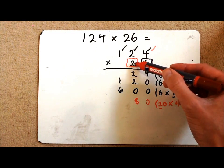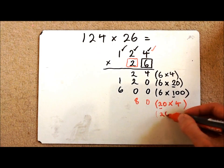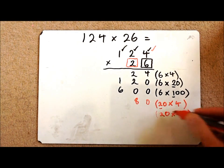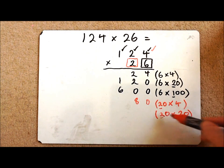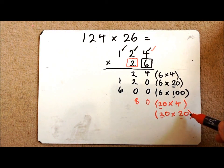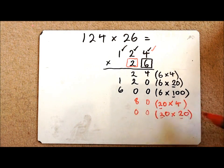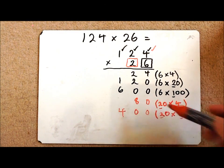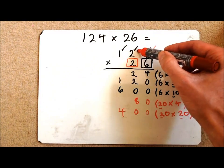I've then got to multiply my 20 by the next digit in the tens column. So I'm now doing 20 times 20. So I know what 2 times 2 is. 2 times 2 is 4. But I've got to make it 100 times bigger because I've got two zeros. So if I put those two in first and then I know that 2 times 2 is 4. So I've now multiplied by my 10.